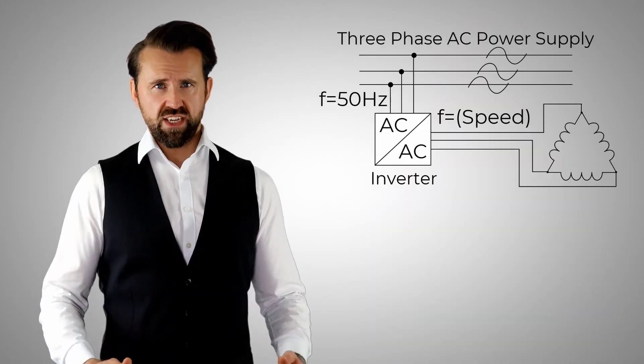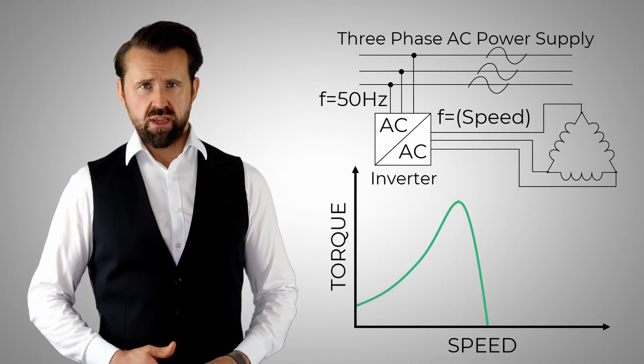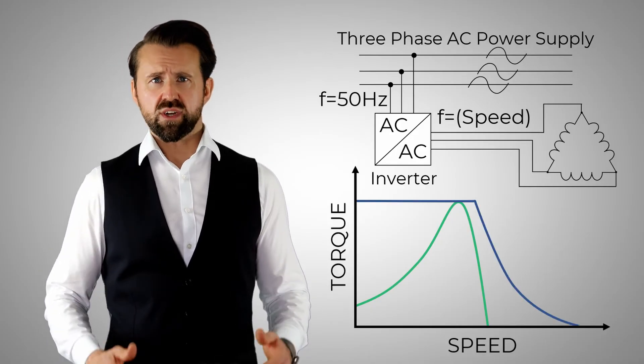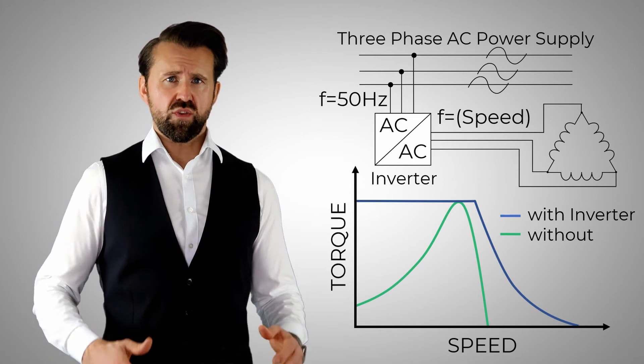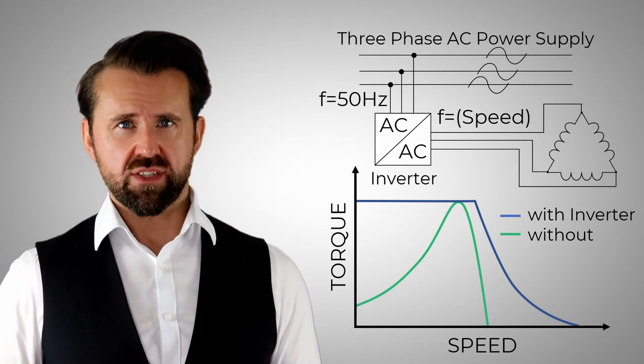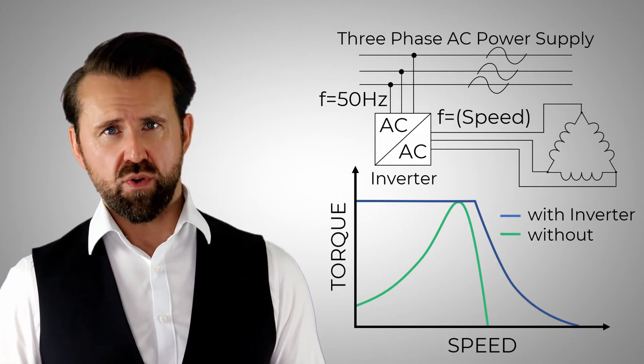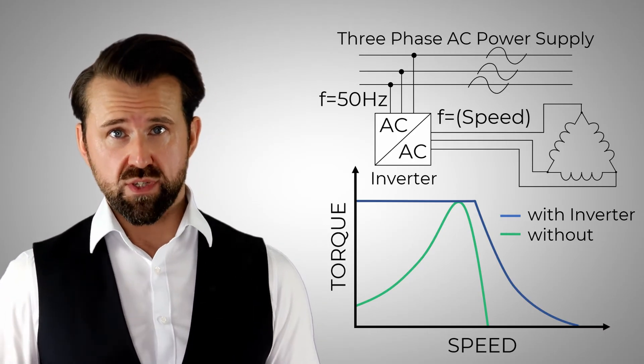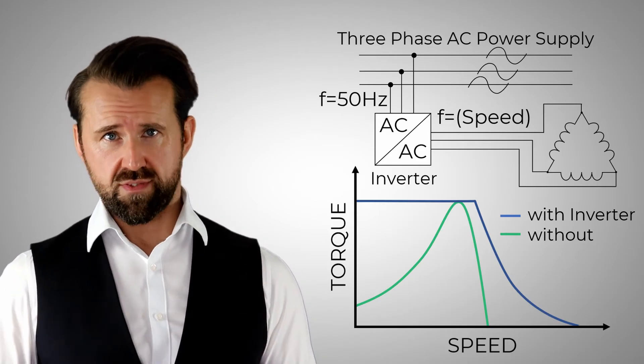The best way to use the full potential of the induction machine is by using an inverter. By using an inverter, the rotational frequency of the stator can be adjusted. This allows a constant torque to be achieved over a long speed range. The inverter takes 50 Hz or 60 Hz from the three-phase network and converts it into an output frequency depending on the motor speed. I have put the link in the description where you can find a direct comparison of all characteristic curves.